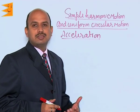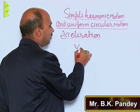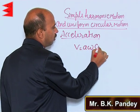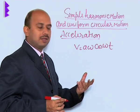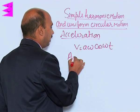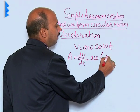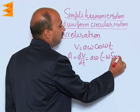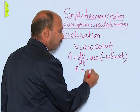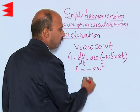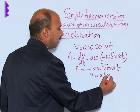Now we can calculate acceleration of the particle executing SHM. We know V is equal to A omega cos omega t. If we differentiate it with respect to time we will be getting acceleration. So we can write A is equal to dV upon dt is equal to A omega minus omega sin omega t. This is the differentiation of cos omega t. So we can write A is equal to minus A omega square sin omega t, and Y is equal to A sin omega t.